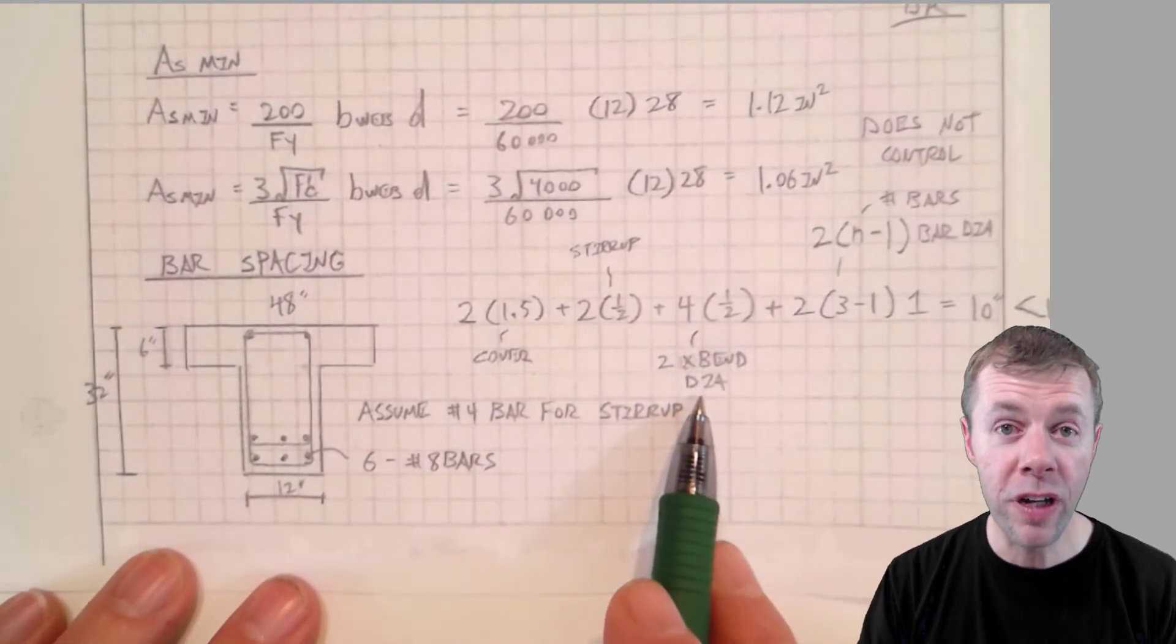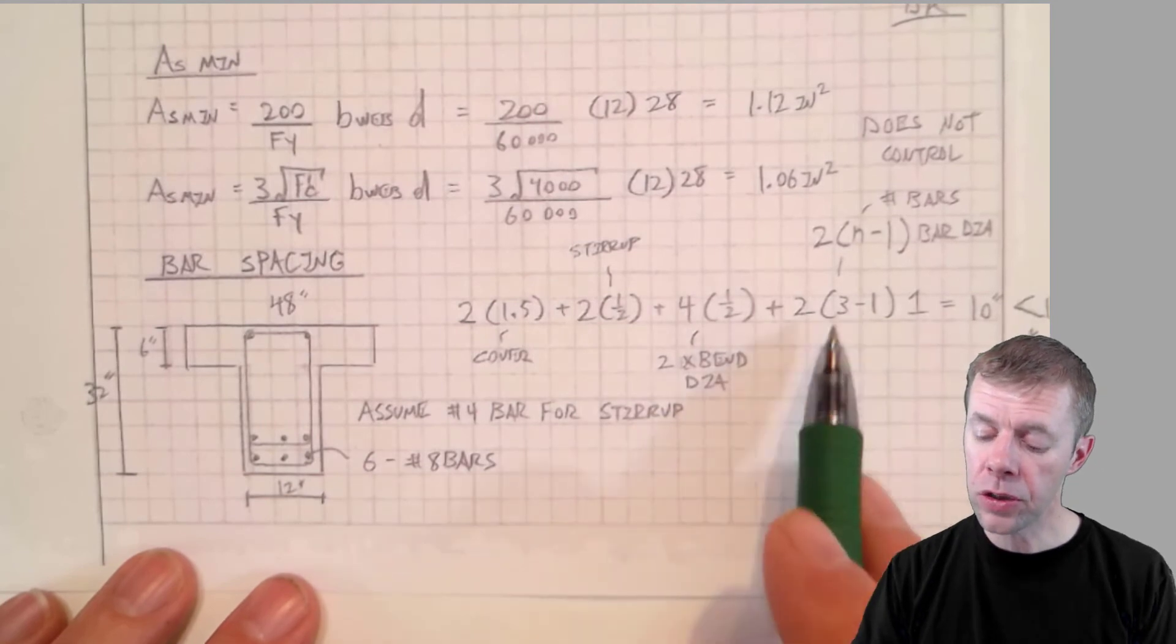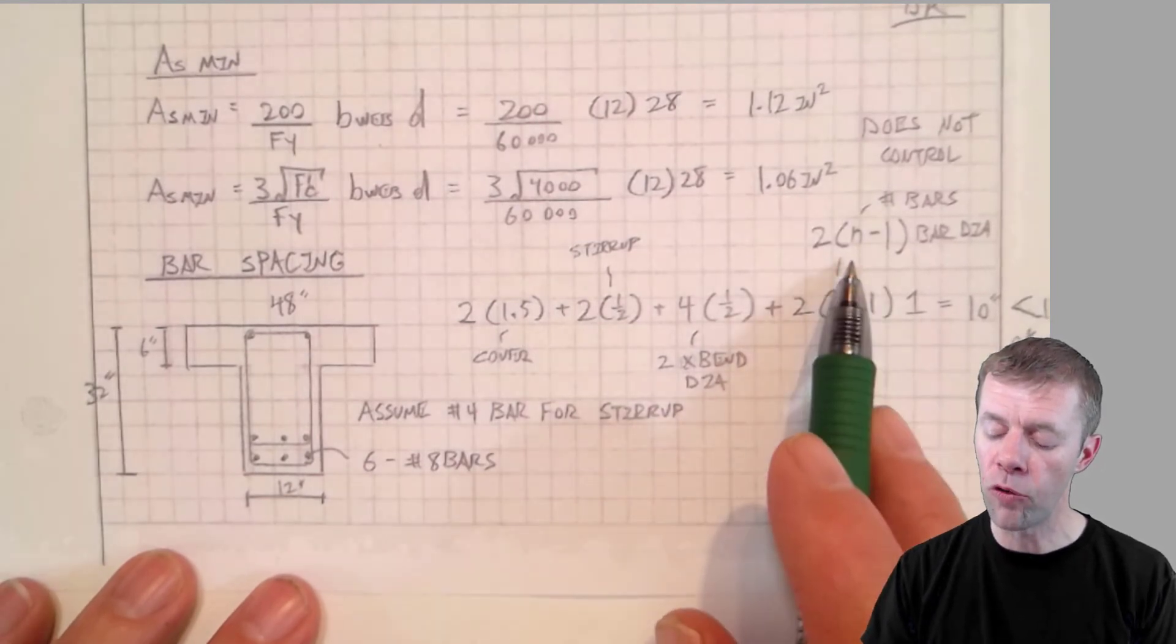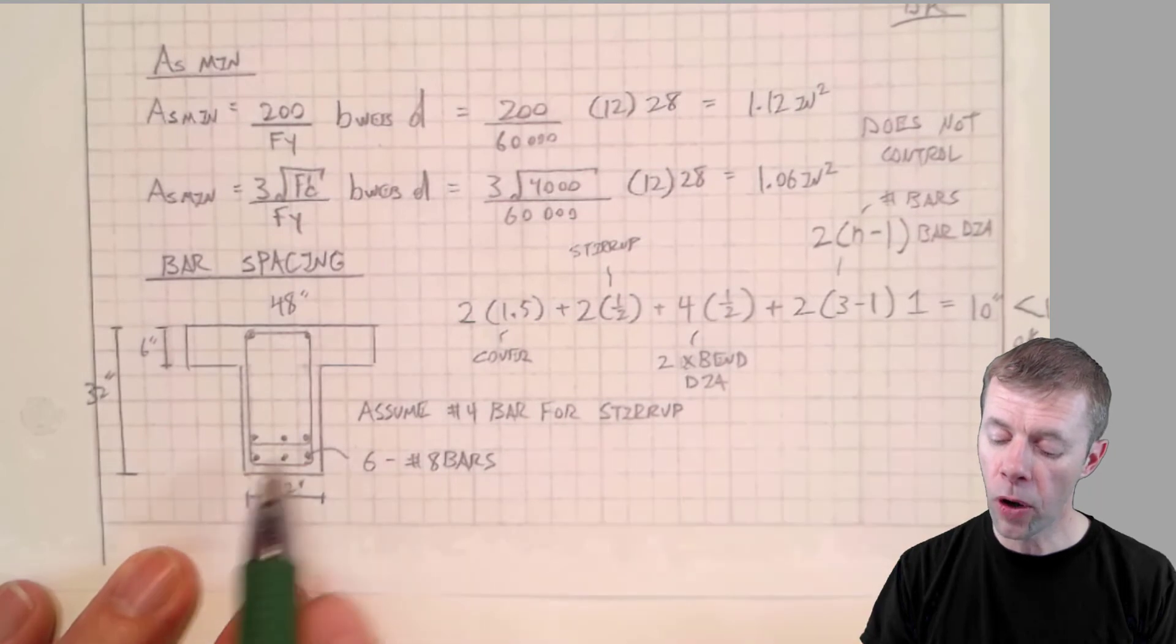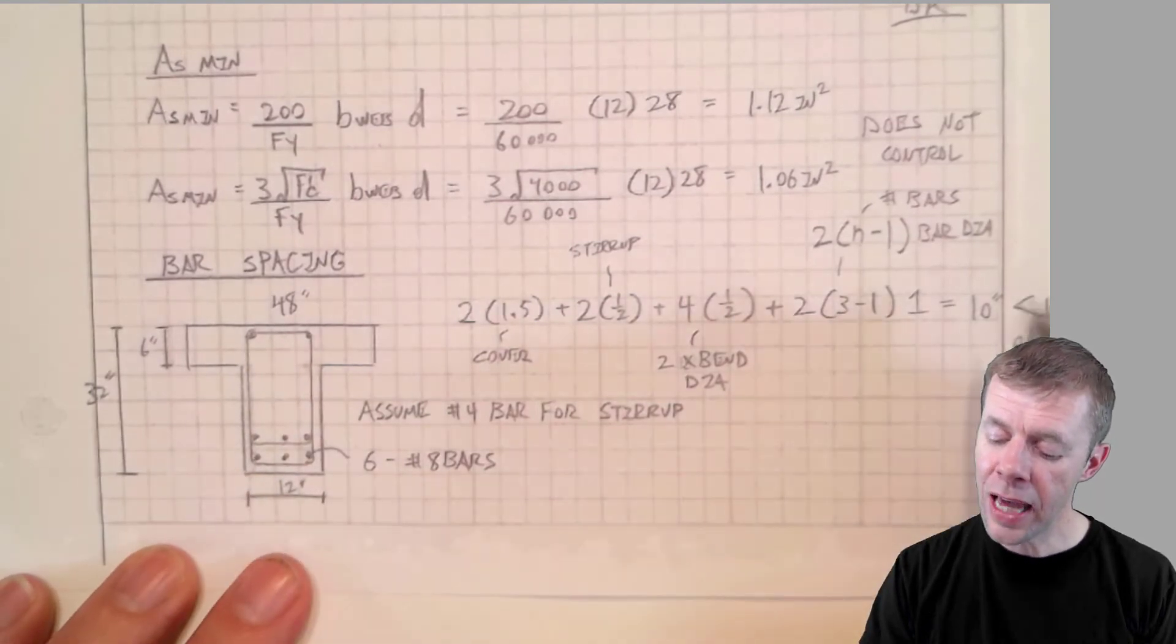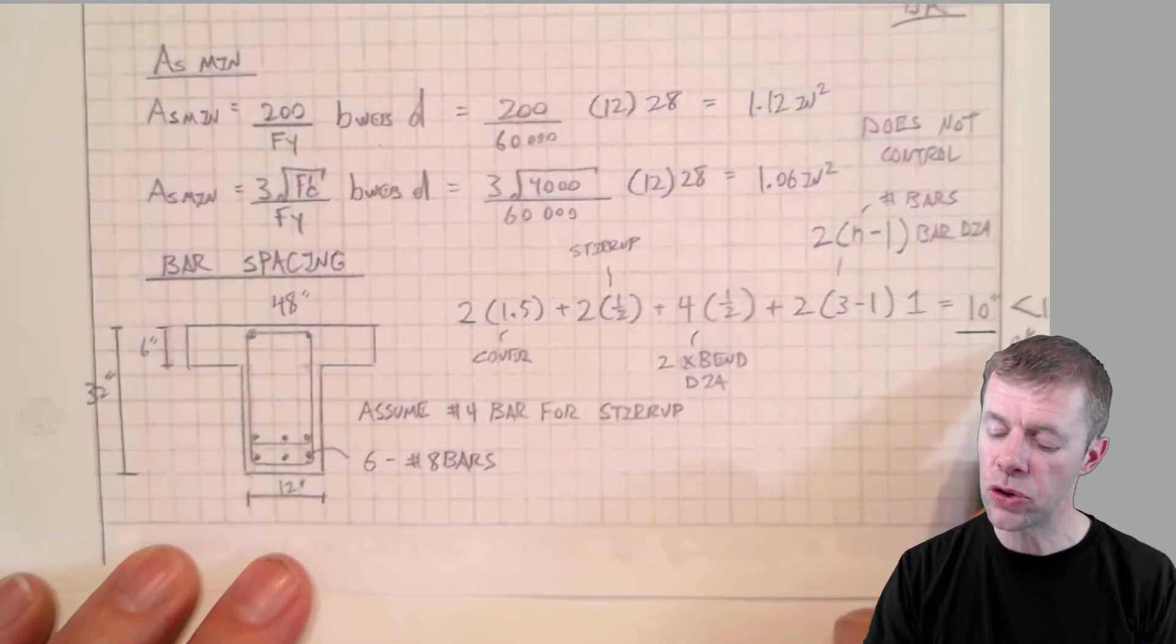And now I plug into this 2 times n minus 1 where n is the number of bars. I'm choosing three bars across here. And I get 10 inches which is just a little bit less than 12.